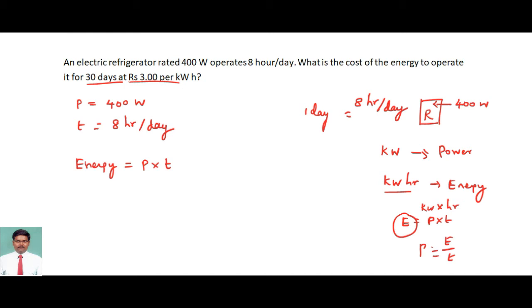Power is equal to 400 and the time I am going to write as 8 hours per day, multiplied by 30 days. Daily I am operating the refrigerator for 8 hours, and for 30 days I am doing the calculation.